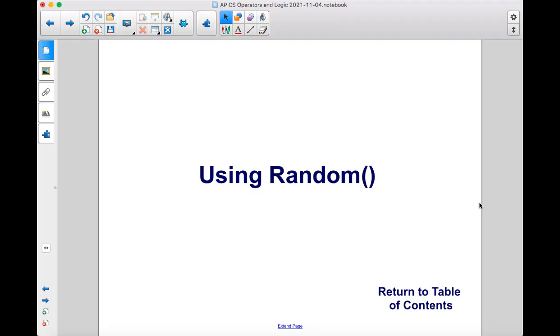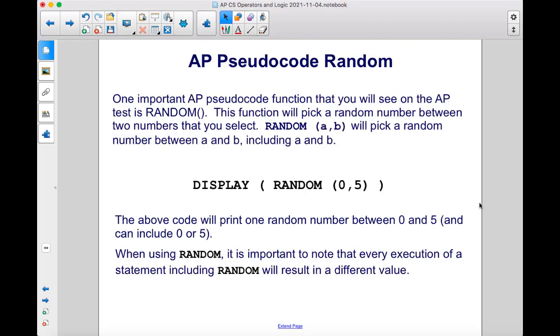One important AP pseudocode function that you will see on the AP test is RANDOM. This function will pick a random number between two numbers that you select. RANDOM(a,b) will pick a random number between a and b, including a and b.